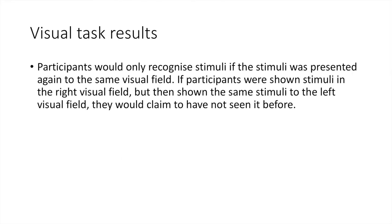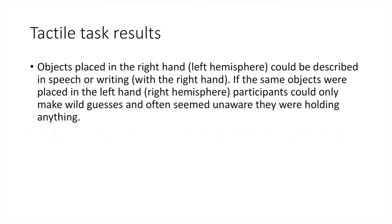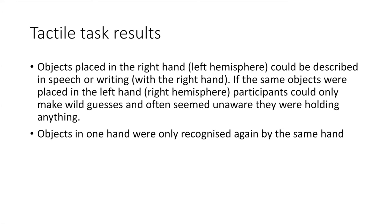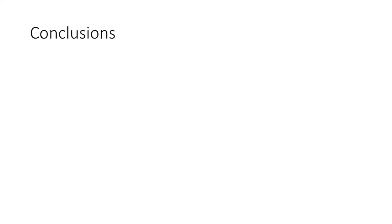For the visual task results, Sperry found that participants would only recognize stimuli if it was presented again to the same visual field. If stimuli were shown in the right visual field but then shown again to the left visual field, participants would claim they had not seen it before. For the tactile task results, objects placed in the right hand could be described in speech or writing. If the same objects were placed in the left hand, participants could only make wild guesses and often seemed unaware that they were holding anything. Also, objects could only be recognized again if held in the same hand.